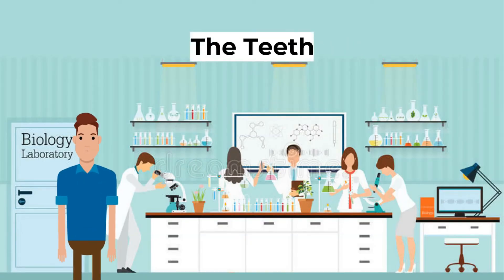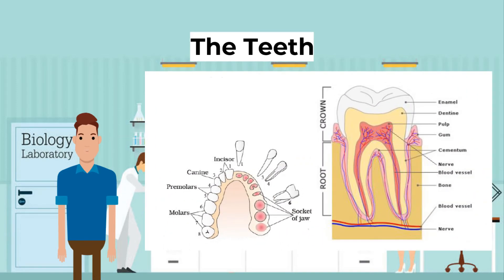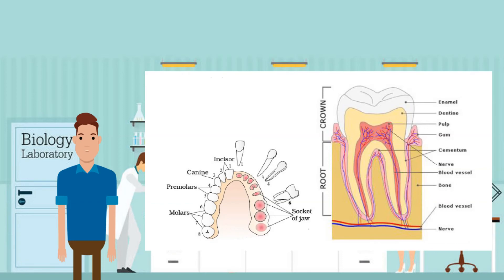Now, the teeth. You need to know the structure of the teeth. The teeth are divided into two main parts: the crown, the upper part, and the root, the part below the surface. The structure is divided further. First, enamel — the protective cover of the tooth and the hardest substance in the body, made of calcium carbonate. Next, dentine — the region below the enamel that forms the main bulk of the tooth. Now, the pulp cavity — soft tissue that fills the volume where the blood vessels and nerves are situated.